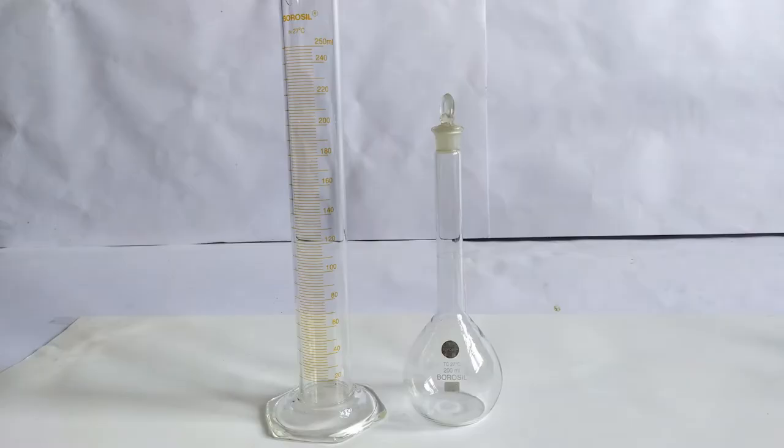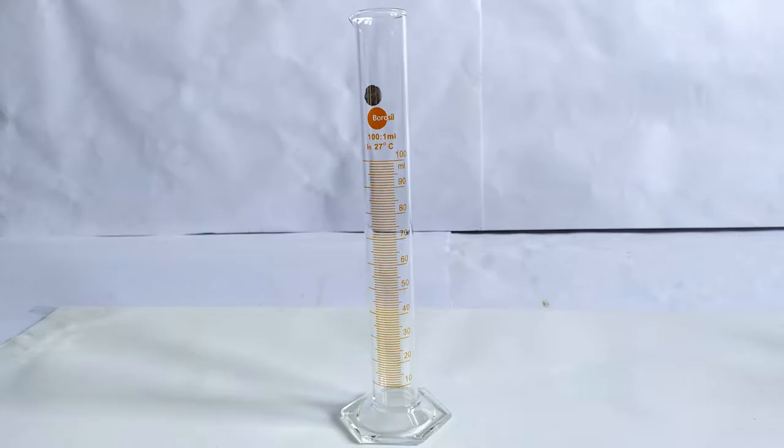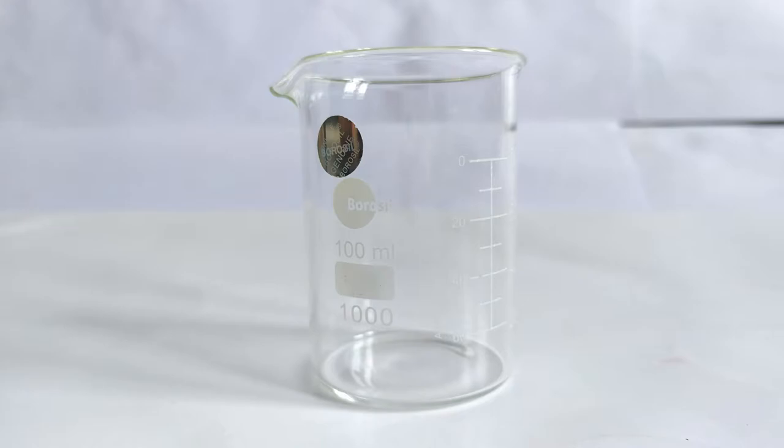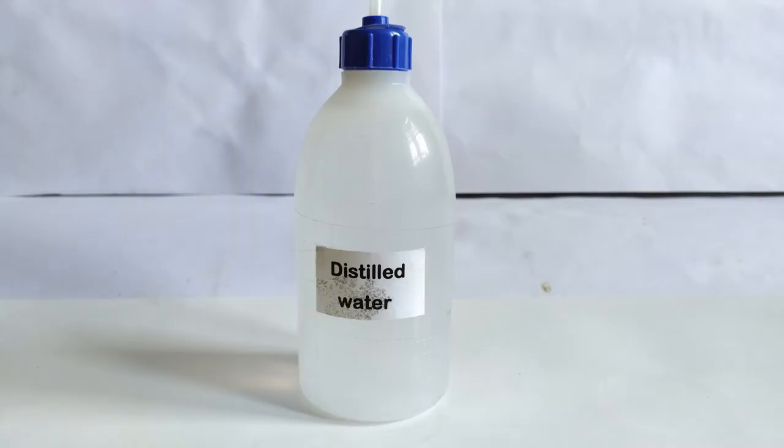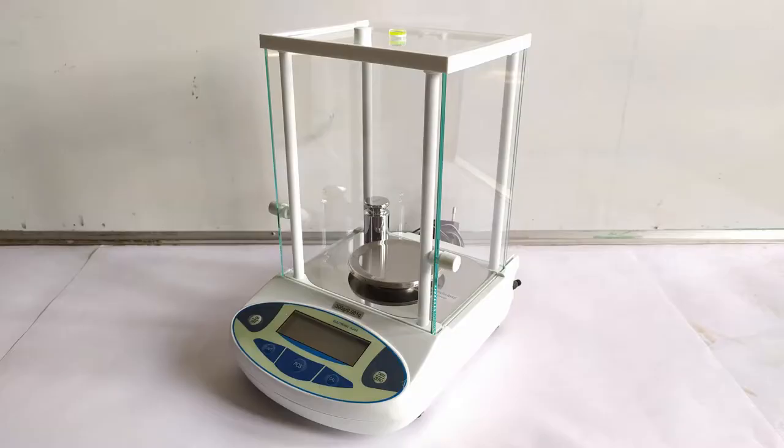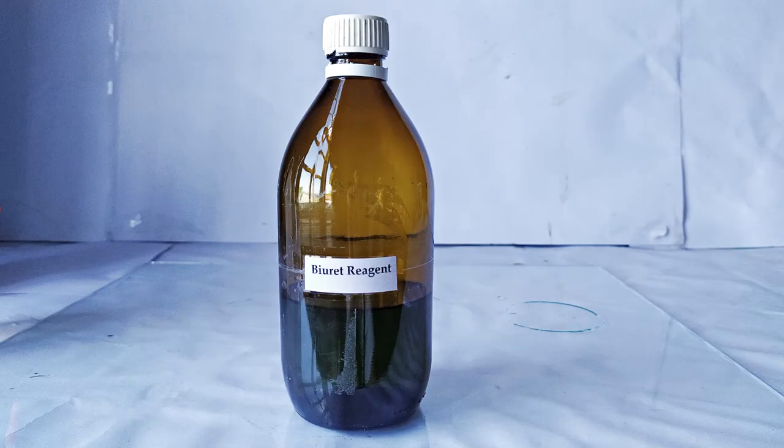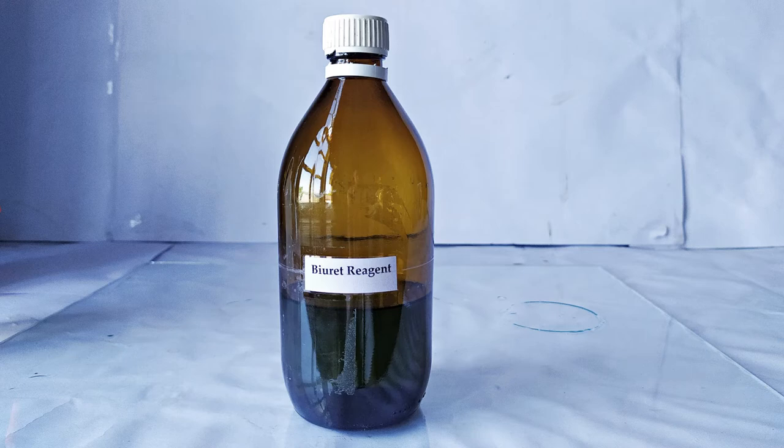You'll also need a 200 ml volumetric flask or 250 ml graduated cylinder, 100 ml graduated cylinder, 100 ml beaker, stirring rod, funnel, distilled water, a dropper or pipette, analytical weighing scale, and a suitable container with tight fitting cap for final storage of the prepared reagent.